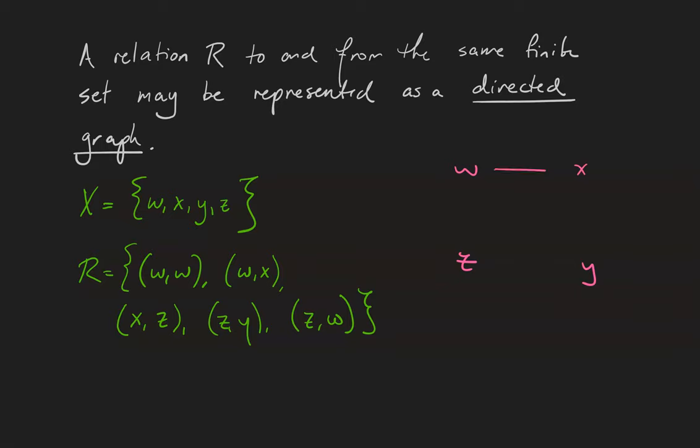So for example, w is related to x, so we draw an arrow from w to x. x is related to z, z is related to y, and z is related back to w. Furthermore, since w is related to itself, we draw a loop that begins and ends at w.